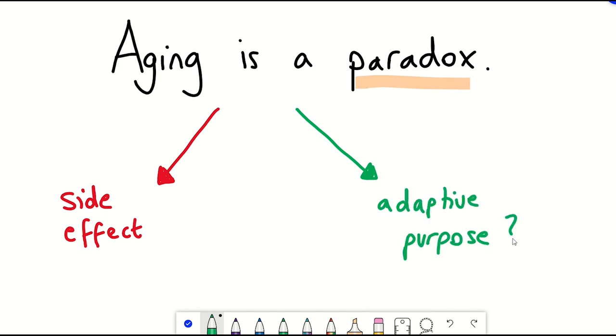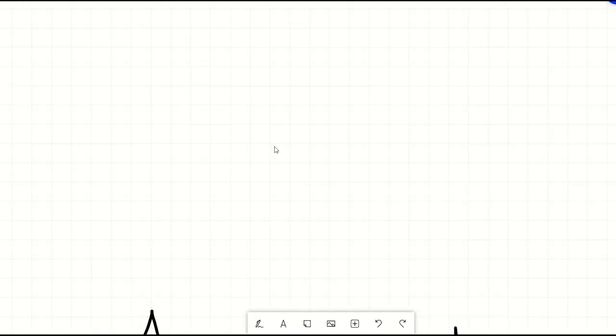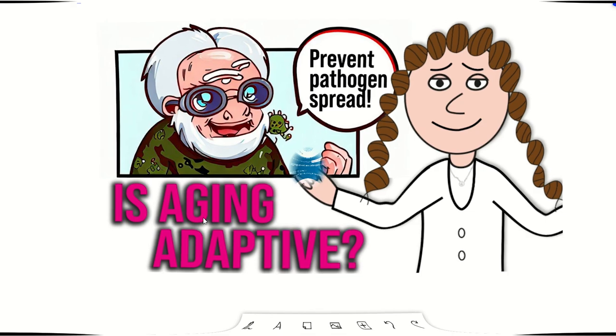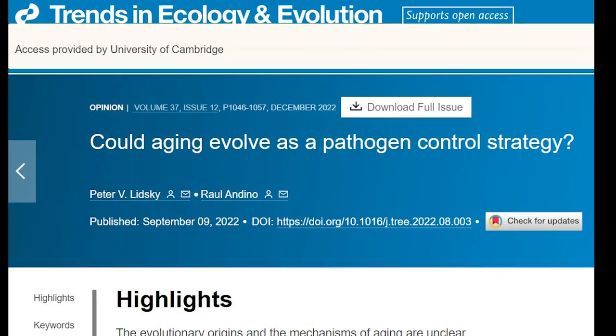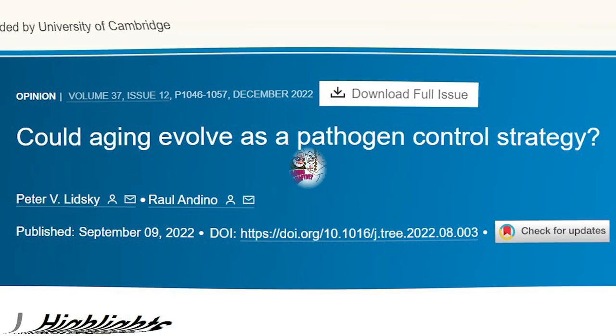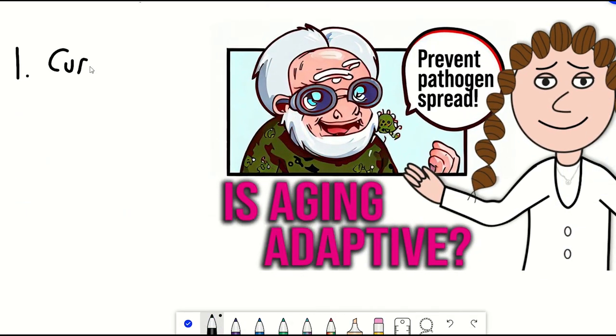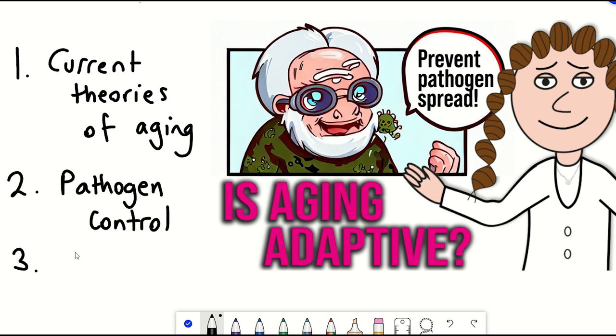In this video, we'll discuss this and deeply consider a more recent proposal that aging evolved as a pathogen control strategy. So there'll be three parts. Firstly, we'll discuss these different theories of aging and why they have certain issues with them. Then we'll introduce this newer theory. And lastly, consider evidence for this pathogen control strategy and why we should even care about this.